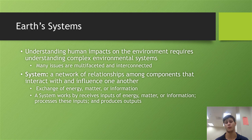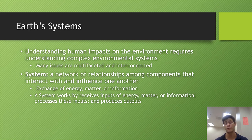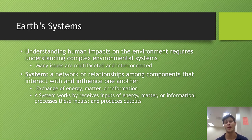By interacting and influencing one another, we mean that they exchange energy, they exchange matter, or they exchange information with one another. So they're constantly exchanging any of these three components and interacting with other components within this entity. That entity is called a system.